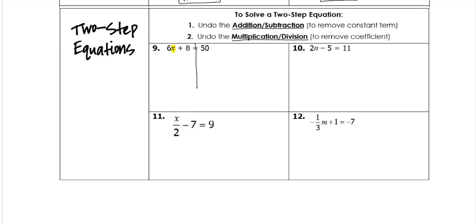Find your variable, because our goal is to always get stuff away from that variable. And we're going to deal with the addition or subtraction first, which means what we're focusing right now on is this plus 8. So we need to undo plus 8 by subtracting 8 to both sides. This gives me 0, so I just bring down my 6x. 50 minus 8 is 42.